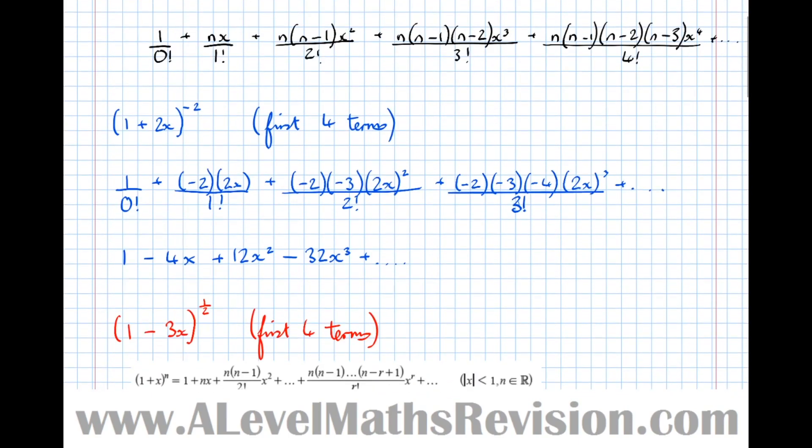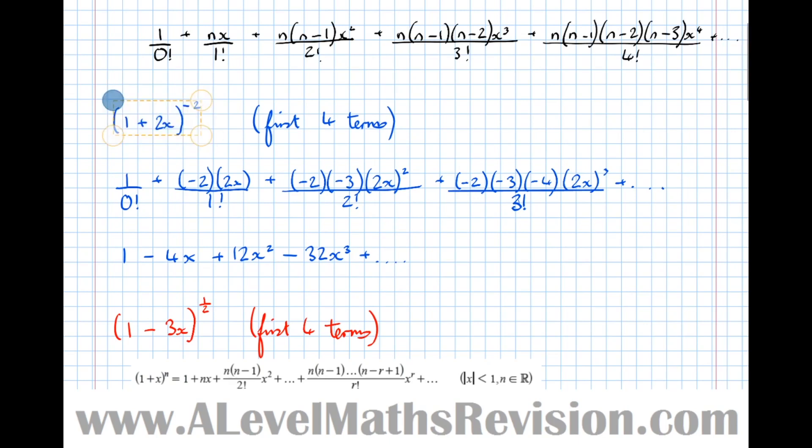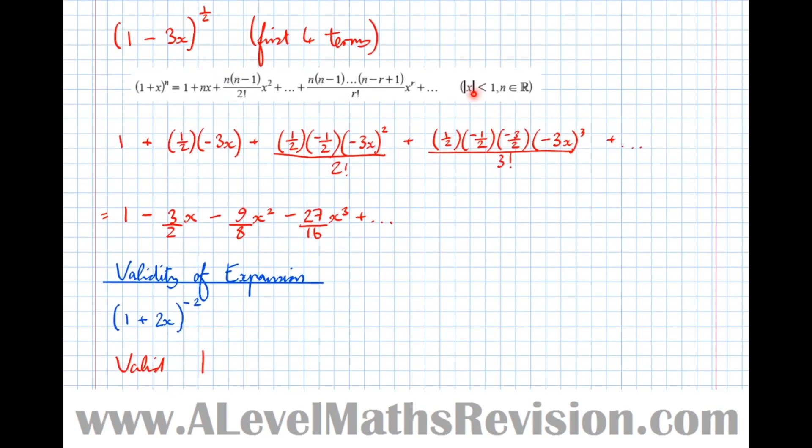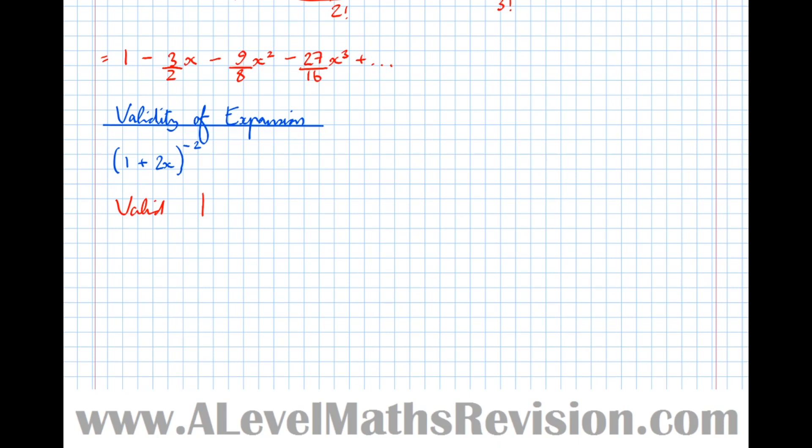This expansion is only valid when the modulus of the x term is less than 1. Let's go back to the initial expansion (1 + 2x)^(-2). The x term is positive 2x, so it's only valid when the modulus of the x term is less than 1. The modulus of 2x is less than 1. The modulus of 2x is the same as the modulus of 2 times the modulus of x, which is less than 1. The modulus of 2 is just 2, so we can delete those bars, which means that the modulus of x is less than 1/2.